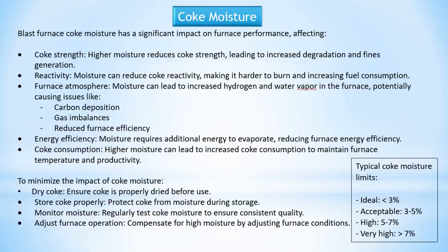Coke moisture. Blast furnace coke moisture has a significant impact on furnace performance, affecting coke strength — higher moisture reduces coke strength, leading to increased degradation and fines generation. Reactivity — moisture can reduce coke reactivity, making it harder to burn and increasing fuel consumption. Furnace atmosphere — moisture can lead to increased hydrogen and water vapor in the furnace, potentially causing issues like carbon deposition and gas imbalances. Energy efficiency — moisture requires additional energy to evaporate, reducing furnace energy efficiency.